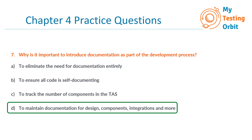Option C, to track the number of components in the TAS, is also incorrect. Documentation serves a broader purpose, including facilitating understanding, maintenance, and communication — not merely tracking the number of components.